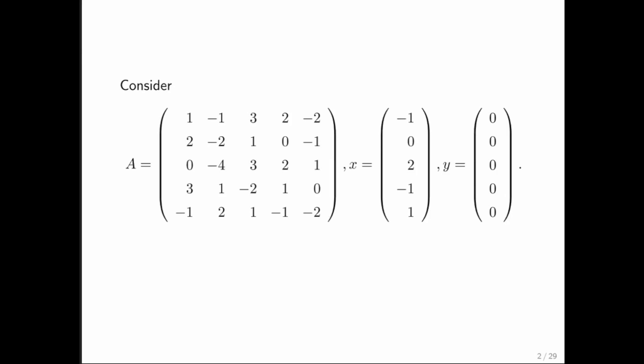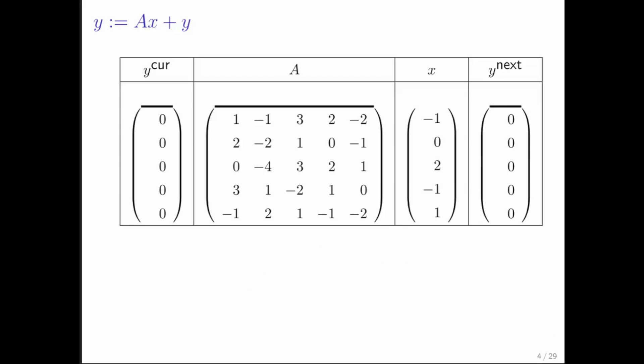So here we have a concrete example of a matrix and two vectors. And what we're going to do is we're going to look at the usual operation of updating y with A times x added to y. How did this go? Well, we marched through the matrix one row at a time, performing dot products and updating the vector.